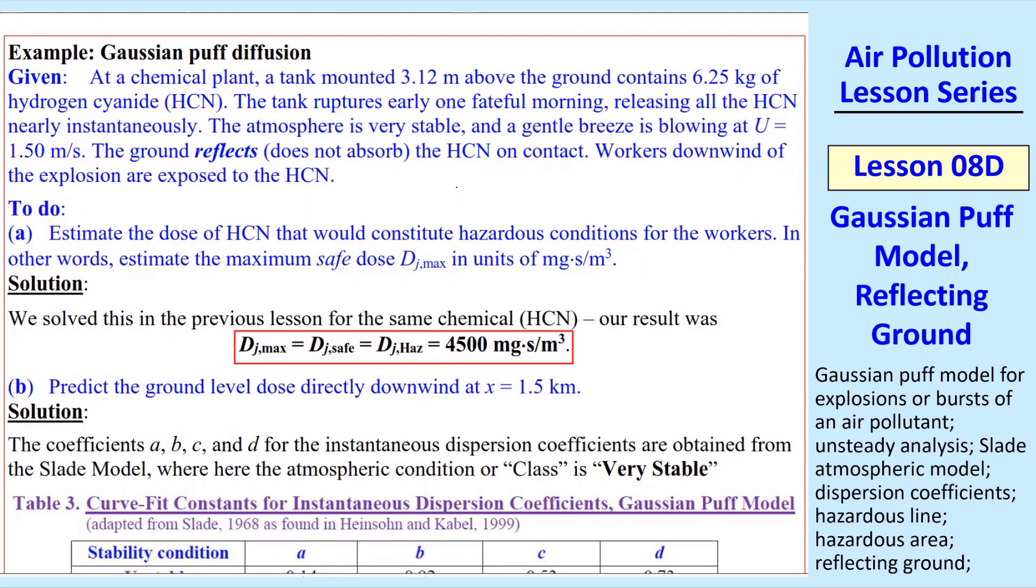Let's do a quick example. Chemical plant, tank mounted at H equals 3.12 meters. This is similar to previous time with hydrogen cyanide, but a different tank with different mass. MJ is 6.25 kilograms, it was 10 before. H was 0 before. Otherwise it's the same velocity and wind speed. Now it reflects instead of absorbing the HCN, and we're still interested in what happens to workers downstream in an explosion.